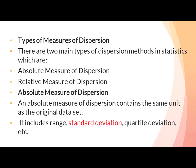Types of dispersion: statistic میں دو ہیں — ایک کو ہم absolute measure of dispersion کہتے ہیں اور دوسرے کو ہم relative measure of dispersion کہتے ہیں۔ Absolute measure of dispersion میں same unit ہوتے ہیں original data set کے۔ Absolute measure of dispersion کے types: range، standard deviation، quartile deviation وغیرہ ہیں۔